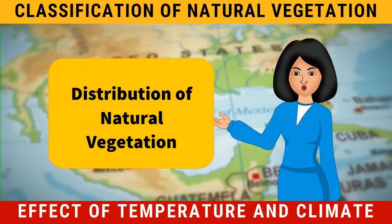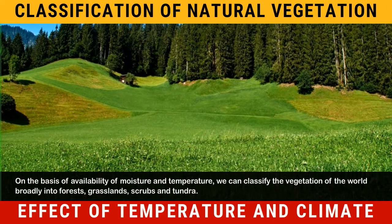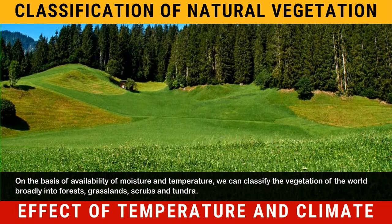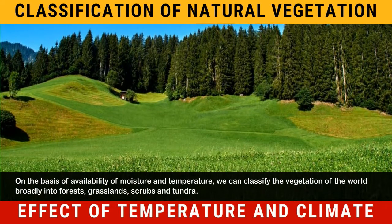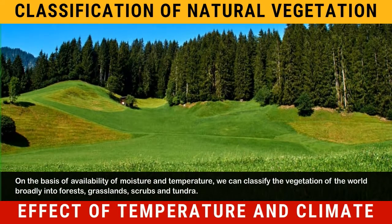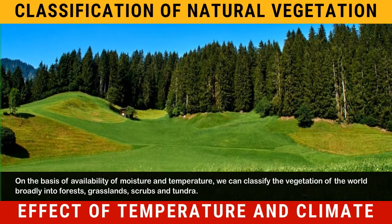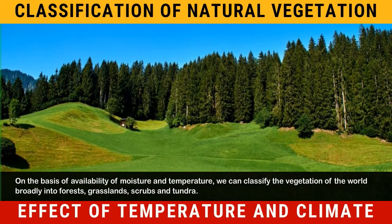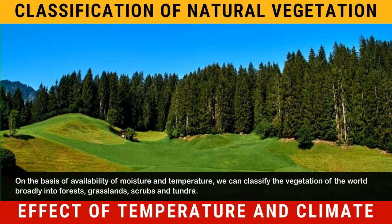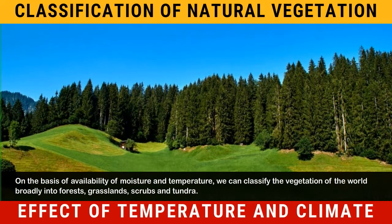Distribution of Natural Vegetation. On the basis of availability of moisture and temperature, we can classify the vegetation of the world broadly into forests, grasslands, scrubs and tundra.